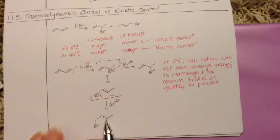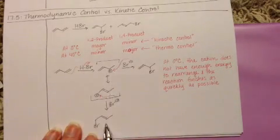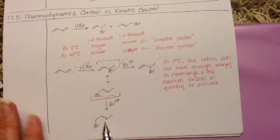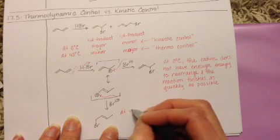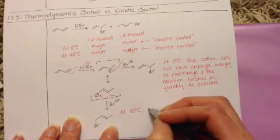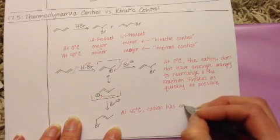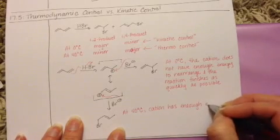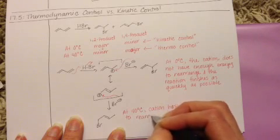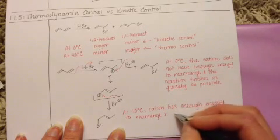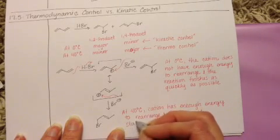So this product is more stable than this product up here. And because the higher temperatures allows for the formation of the more stable product, which has to do with energetics, we say that this process here is under thermodynamic control. So at 40 degrees C, the cation has enough energy to rearrange and form the most stable alkene.